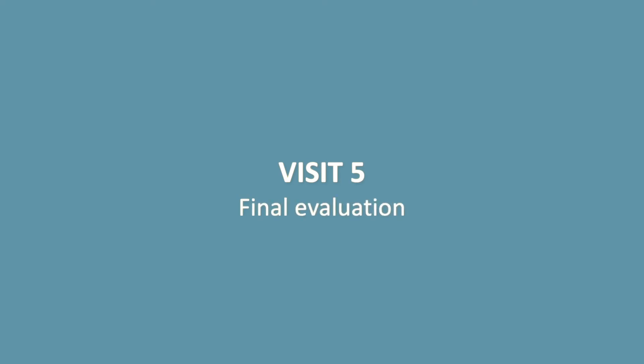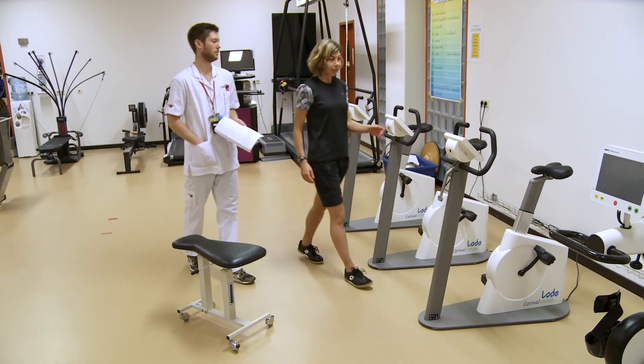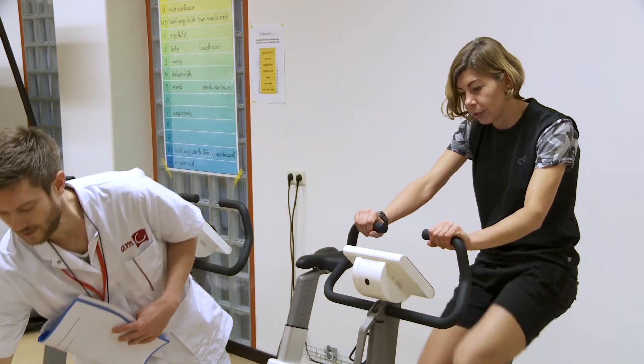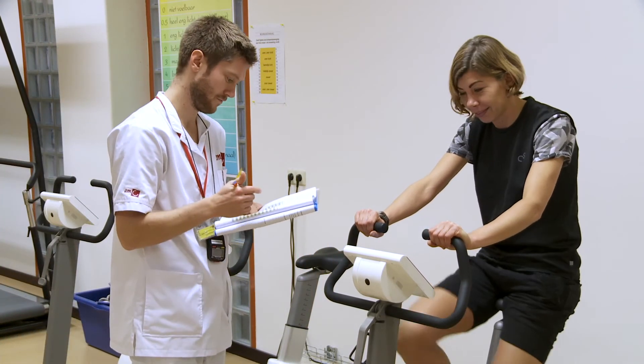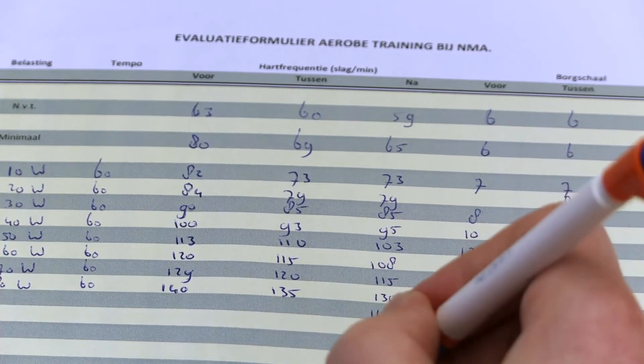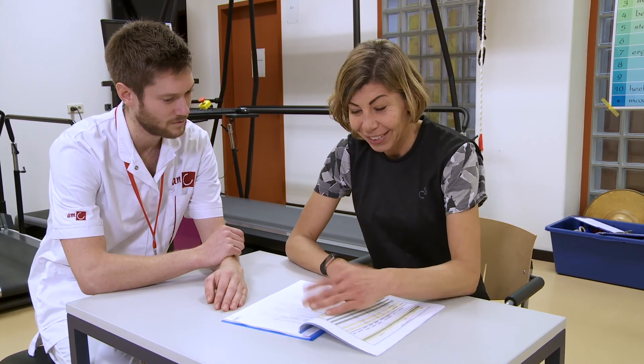Visit 5: Final evaluation. Ask how the patient experienced the exercise program. For the last time, the patient undergoes the submaximal exercise test. Complete the final submaximal exercise test score form as well as the aerobic exercise evaluation form. Discuss the effect of the exercise program on physical fitness with the patient and evaluate the extent to which the treatment goals have been achieved. Finally, discuss the continuation of the exercise program.